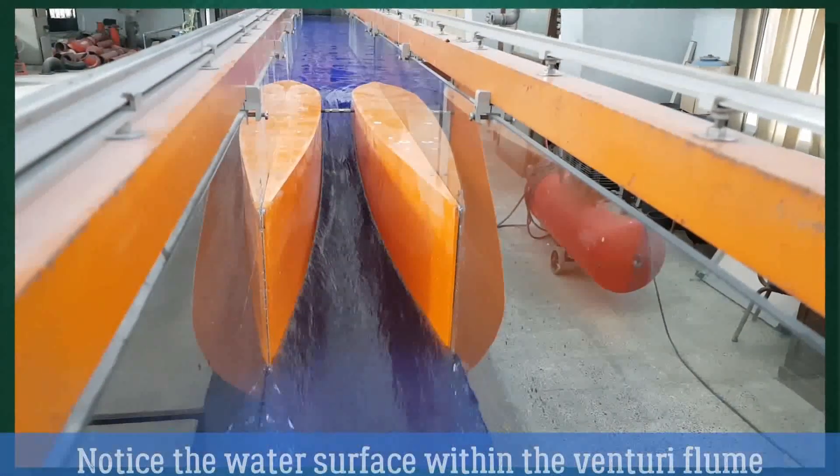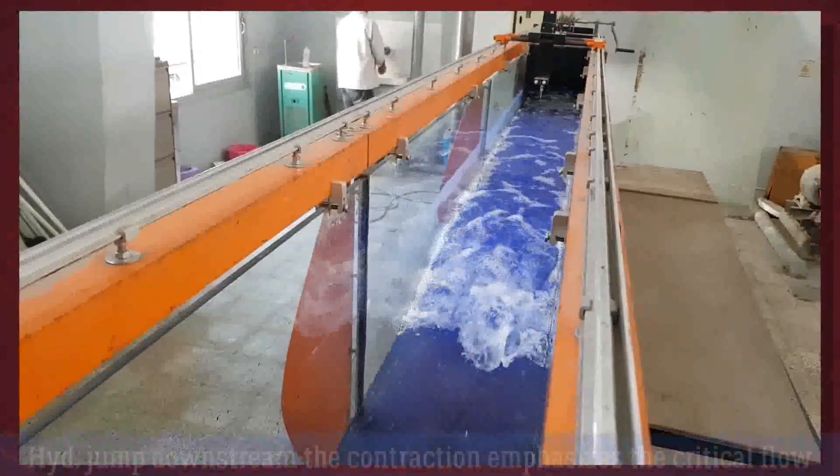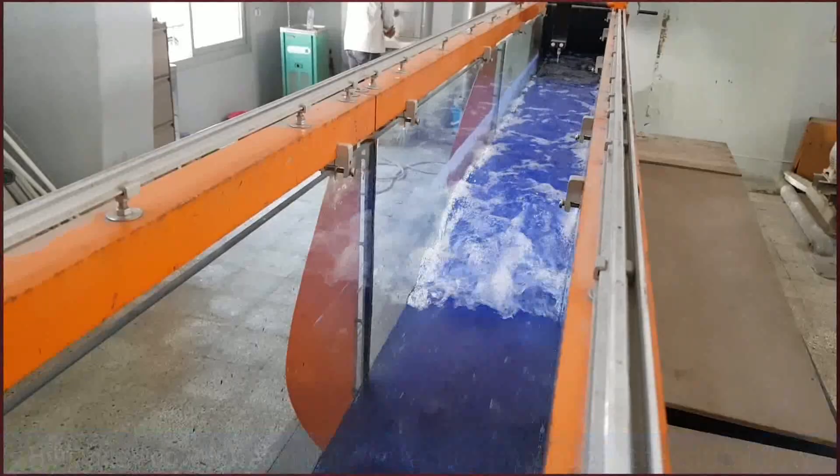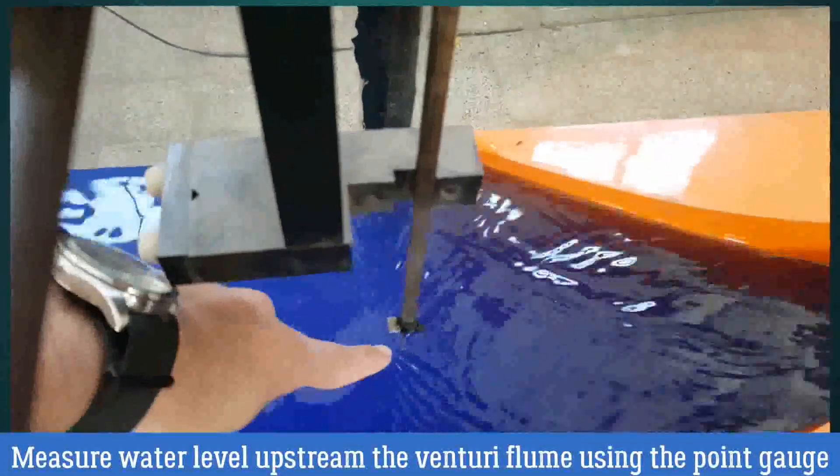You can notice the water surface rapid variation in the venturi flume. Hydraulic jump downstream the contraction emphasizes the critical flow. Now we are going to measure the water level upstream the venturi flume using the point gauge.